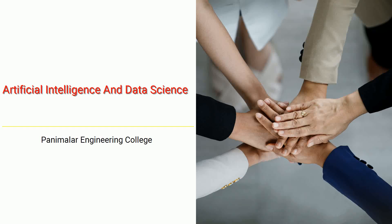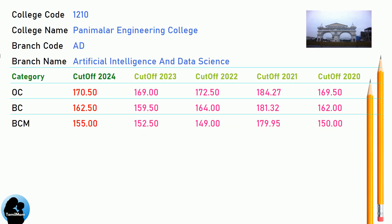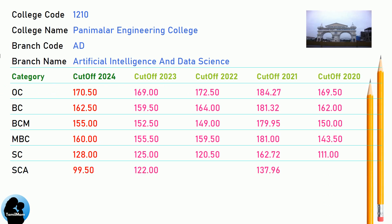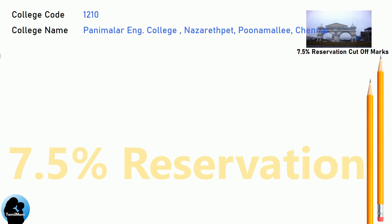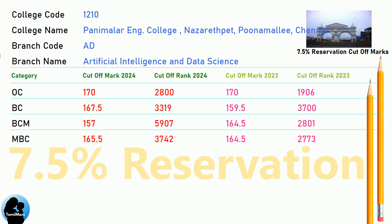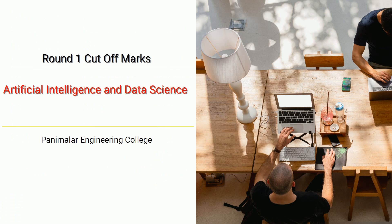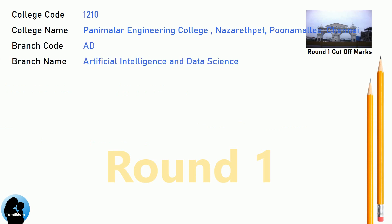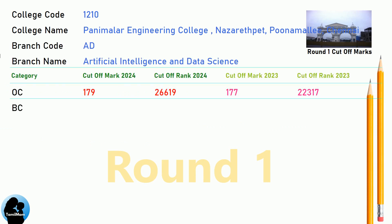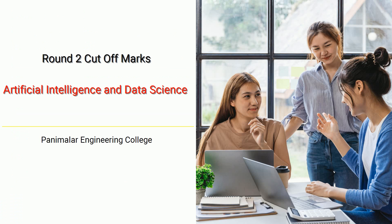TNEA Cut-off for Panimalar Engineering College in Artificial Intelligence and Data Science. TNEA 7.5 Reservation Cut-off for Panimalar Engineering College in Artificial Intelligence and Data Science. TNEA Round 1 Cut-off for Panimalar Engineering College in Artificial Intelligence and Data Science. TNEA Round 2 Cut-off for Panimalar Engineering College in Artificial Intelligence and Data Science.